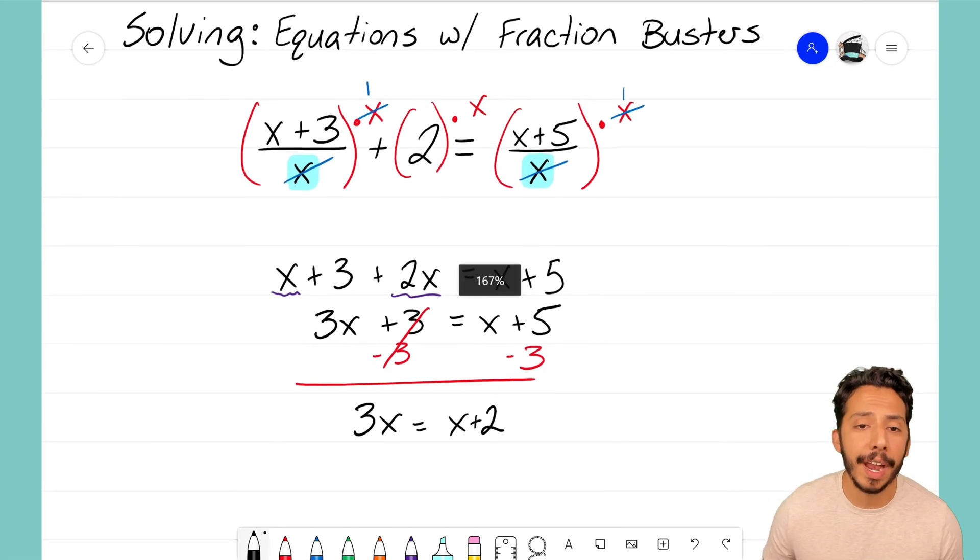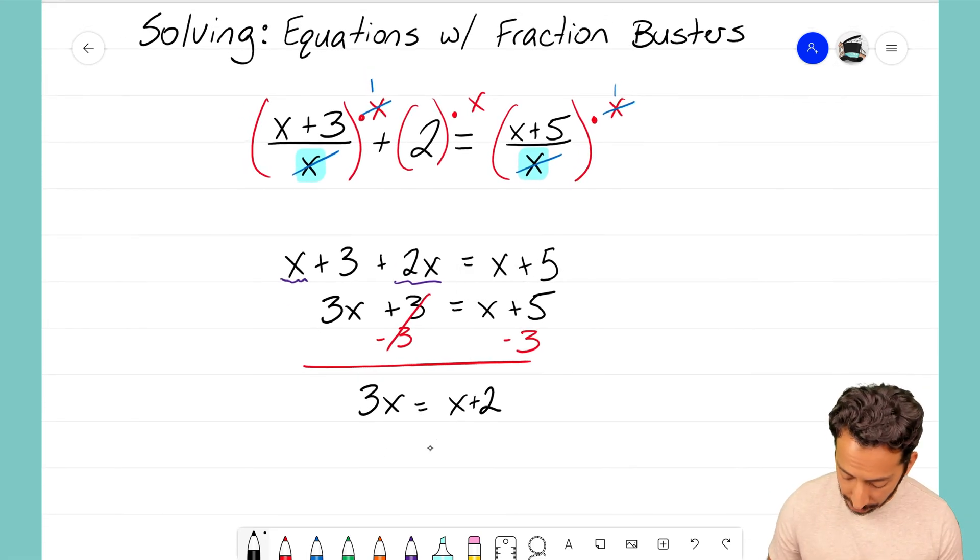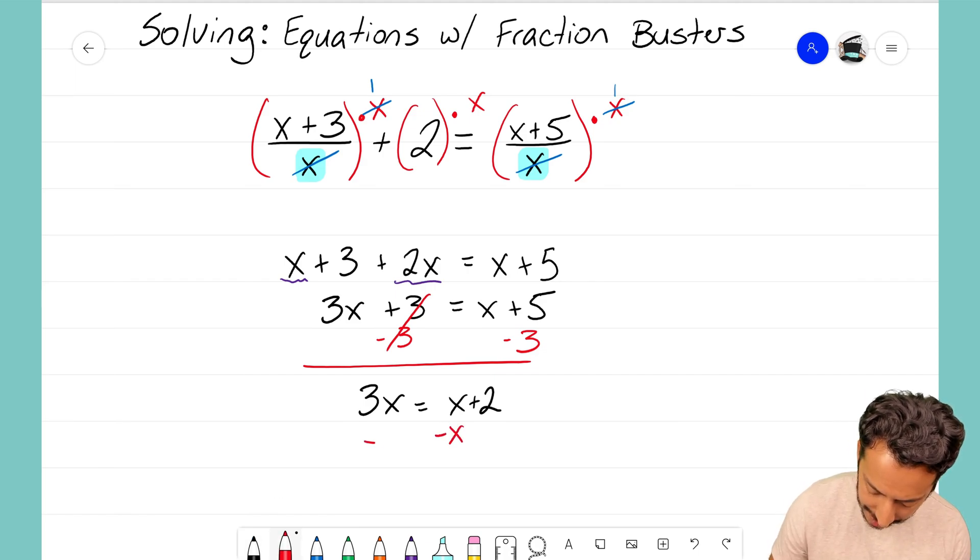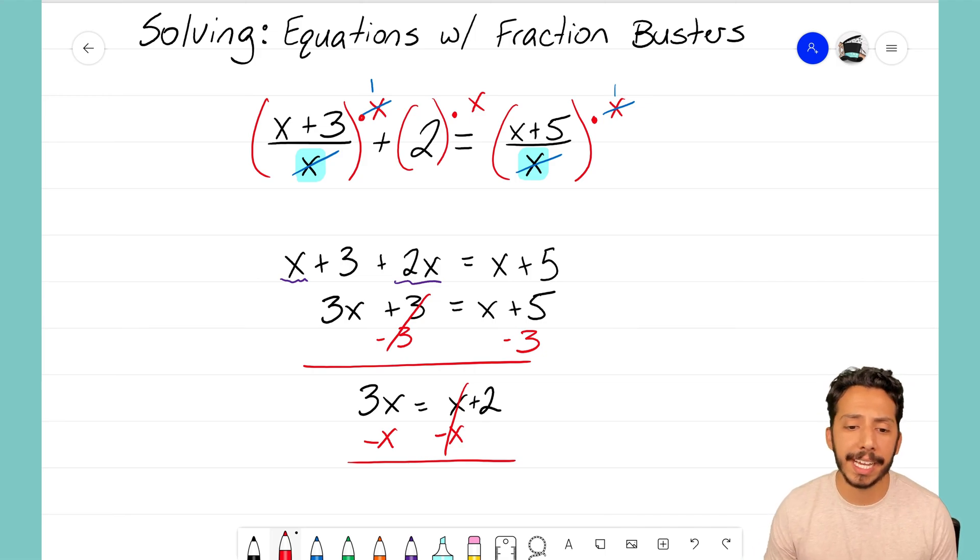Now I'm trying to get x by itself. I think I need to move this other x over to the left hand side, so I think I will subtract x. Just solving this equation to get x on its own. Well 3x take away an x leaves us with just 2x on the left hand side, and it equals 2.